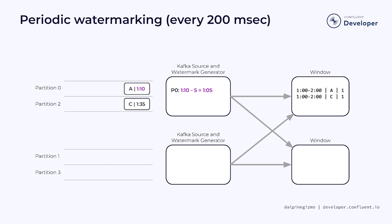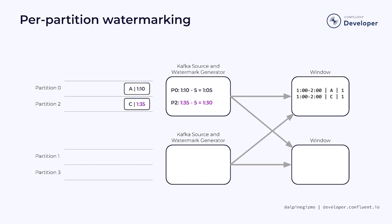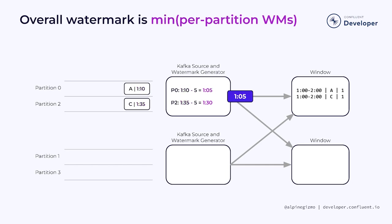The source generates its watermark by first computing the watermark for each partition independently. Using the same 5-minute out-of-order estimate, this produces a watermark at 1:05 for partition 0, since the largest timestamp seen so far on partition 0 is 1:10. Using the same logic, the watermark for partition 2 is 1:30. The watermark that the Kafka source produces is then the minimum of these per-partition watermarks. This makes sense because the stream includes events from both partitions, so it can be no more complete than the furthest-behind partition, which is partition 0.